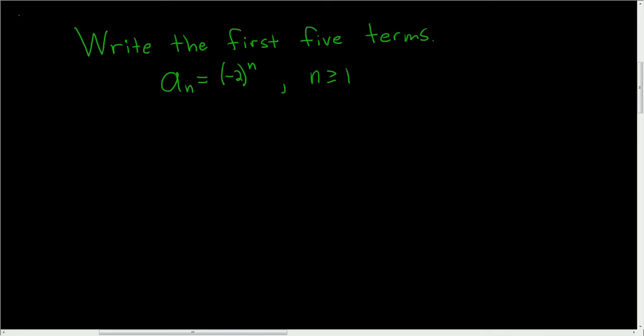Write the first five terms of the following sequence. It looks like we're going to start at 1 because we're told n is greater than or equal to 1. So we'll start by replacing all of the n's with 1's. So a sub 1 is negative 2 to the first power, which is just negative 2.